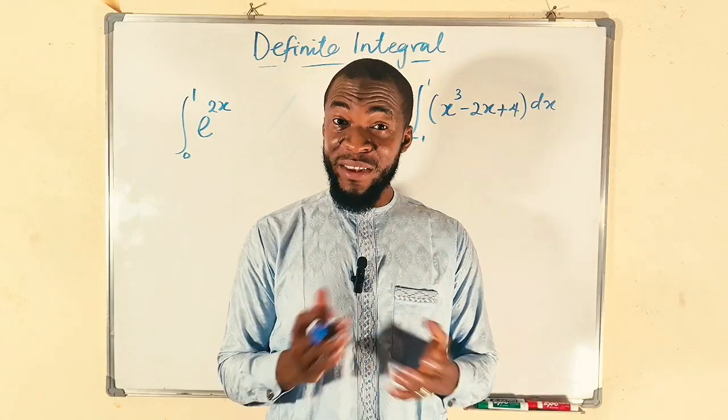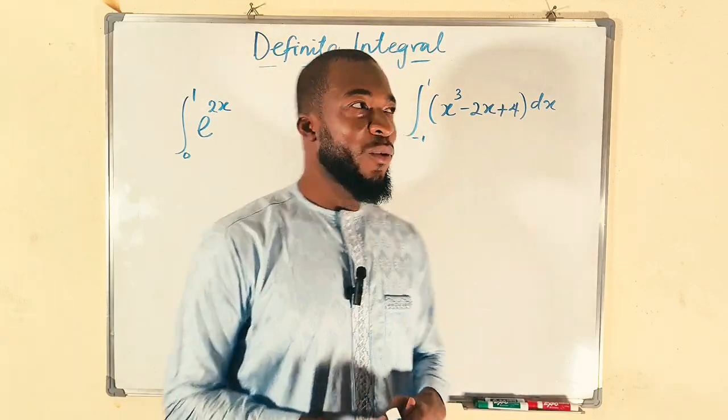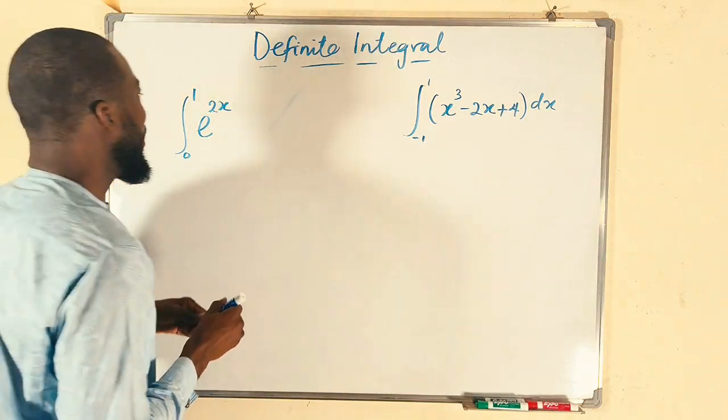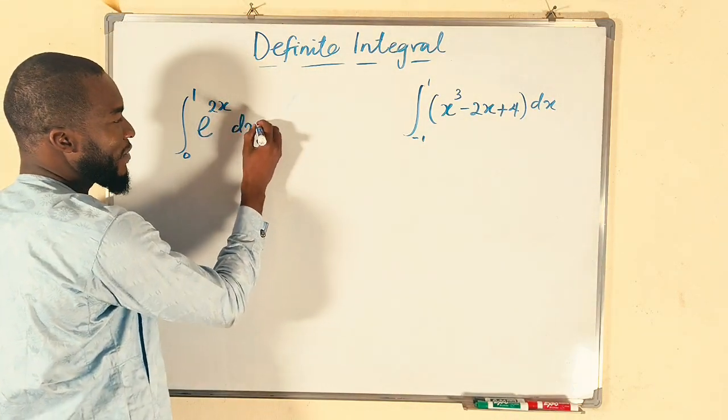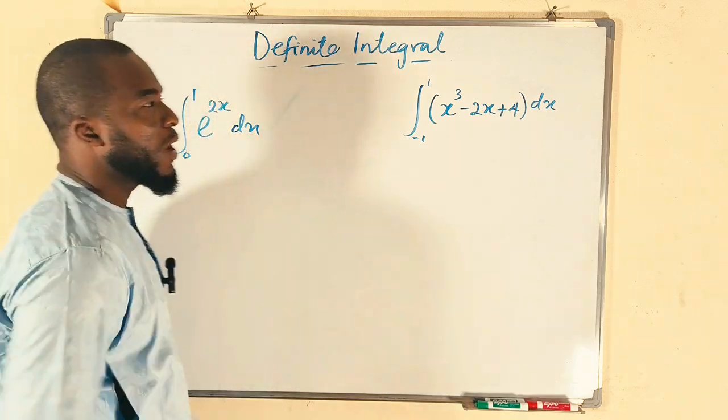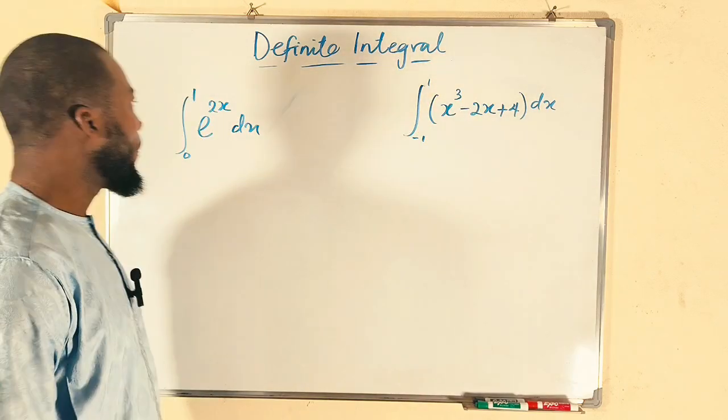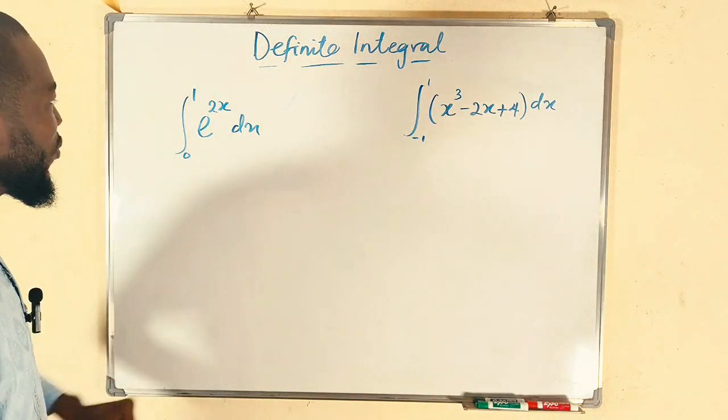Hello, good day viewers. Still on definite integral. Today we are going to integrate these two functions. We have e to the 2x dx from 0 to 1 and we have x cubed minus 2x plus 4 from negative 1 down to 1. Alright, let's start with this one.